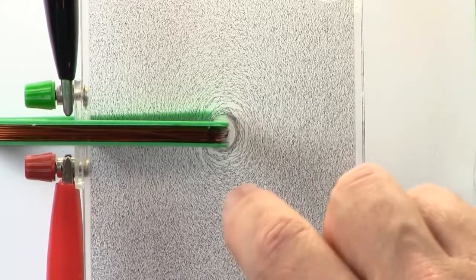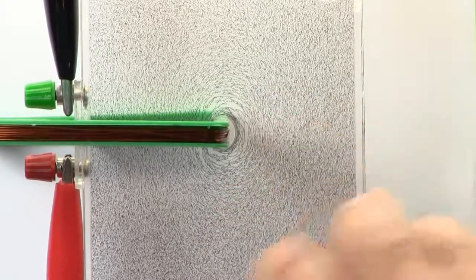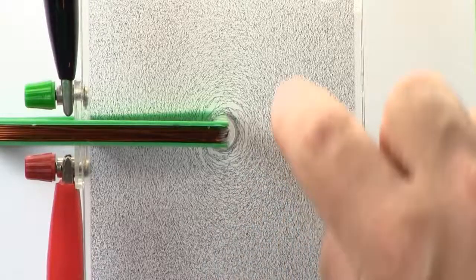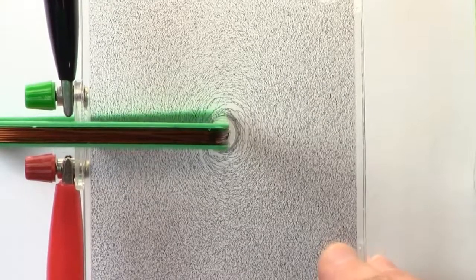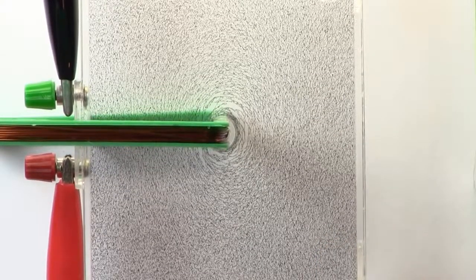So what we can surmise from this is we're actually getting magnetic field lines that are circular around the coil that's going through the plate. That's pretty interesting.